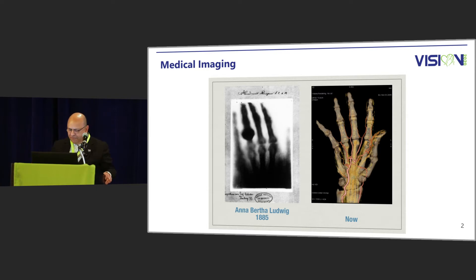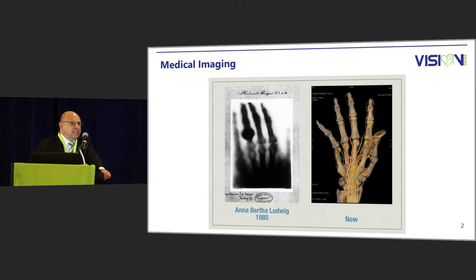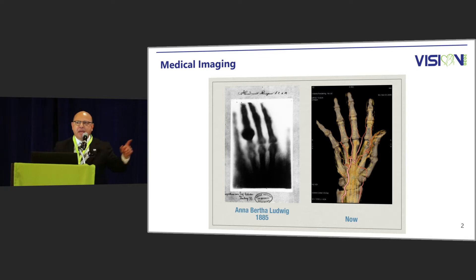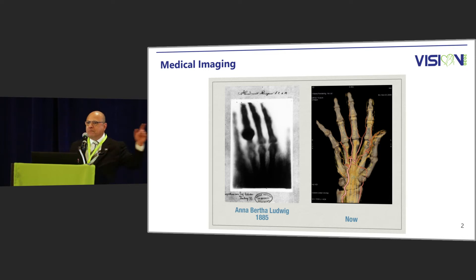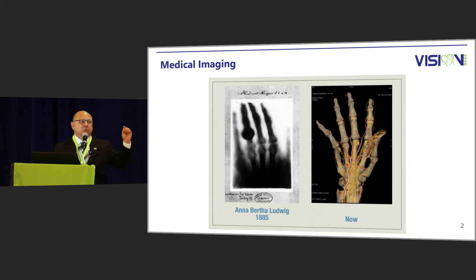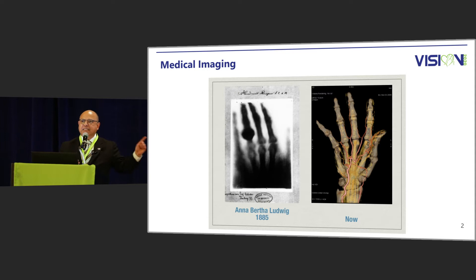That was in 1885. This is an X-ray of the hand now — a multi-detector, multi-planar, contrast-enhanced CT of the hand with reformations to bring in the bones, and for the people up close you may be able to see some of the vascular tufts at the fingertips. I submit that they're both X-rays but very different. We should be providing this kind of imaging for the Annas that live in 2020.